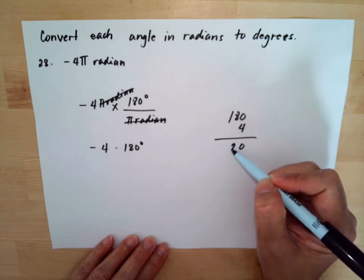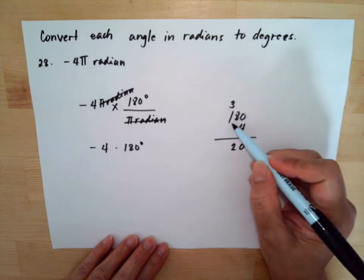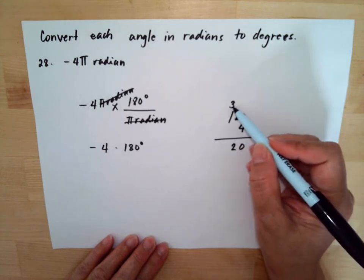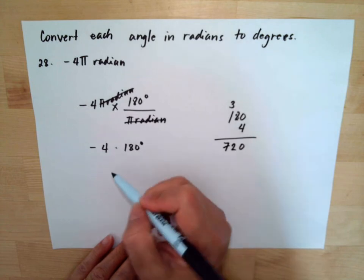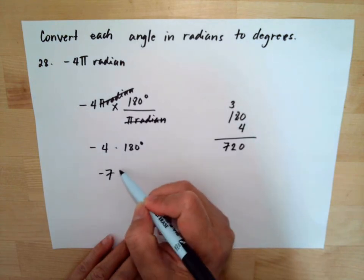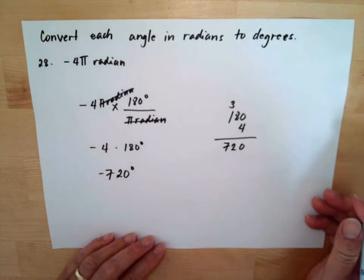So this will be 0, or multiply 8 multiplied by 4 will be 32, then 1 multiplied by 4 is 4 plus 3 is 7. So this is negative 720 degrees.